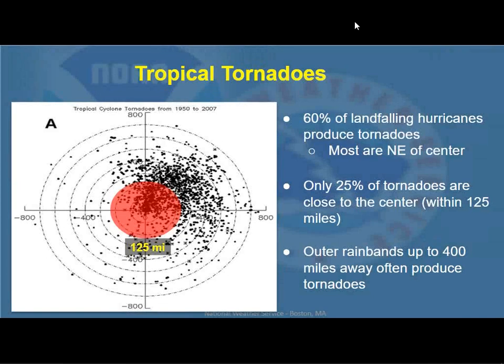Tropical tornadoes are interesting because we do on occasion see them. With Irene, we had a number of circulations off the coast that were likely waterspouts but never made landfall. Typically with tropical storms, hurricanes, or even tropical depressions or remnants — last year we had Fred, Henri, and Ida giving us remnant tornadoes across Massachusetts — about 60% of landfalling hurricanes will produce tornadoes. Most of these are northeast of the center where we have better shear, but only about 25% are within about 125 miles. It's the outer rain bands up to 400 miles away from the storm that can produce these tornadoes, and this can even occur during extratropical transition.